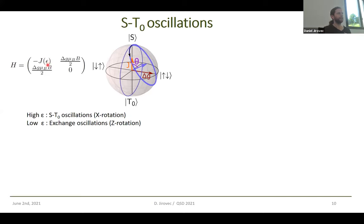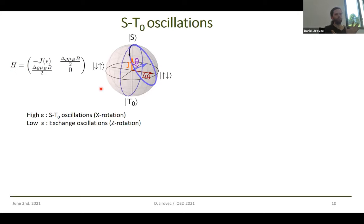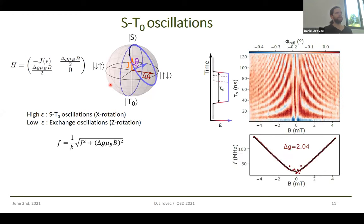The exchange interaction can be controlled by simply bringing the dots closer together or further apart, done by electrically tuning epsilon, the detuning. In our convention, high detuning means the dots are far apart, so the exchange interaction is small. In this situation the G-factor difference terms are dominant, corresponding to an X rotation between singlet and T₀. When you have small epsilon, you have a large exchange interaction and you are doing exchange oscillations on the equator of the Bloch sphere. The rotation angle always depends on the ratio between these two terms.